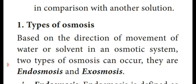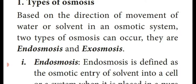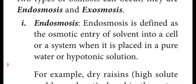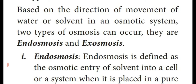Next we are going to see the types of osmosis. Based upon the direction of movement of water or solvent in an osmotic system, it is divided into two types: endosmosis and exosmosis. If water molecules enter the inner side of the cell, it is endosmosis. If water molecules or solvent diffuse outside the cell, it is known as exosmosis.